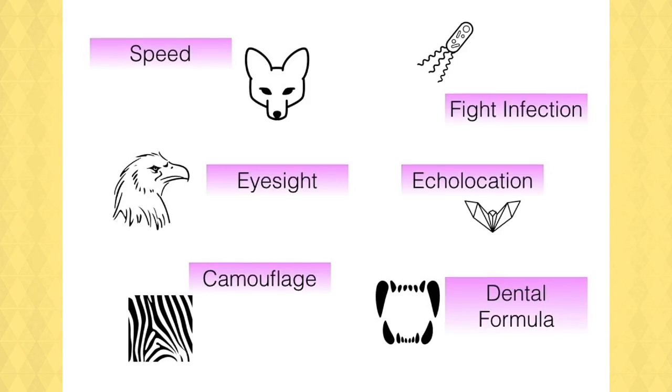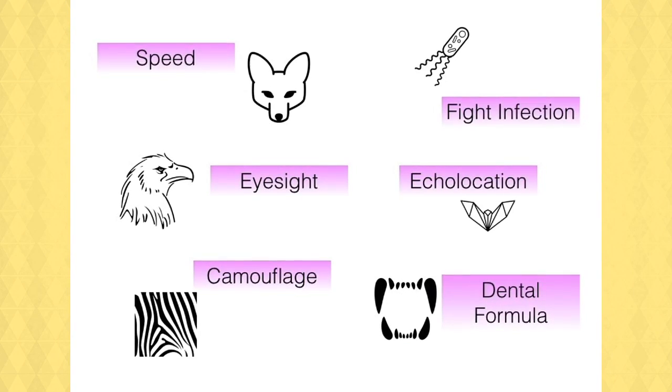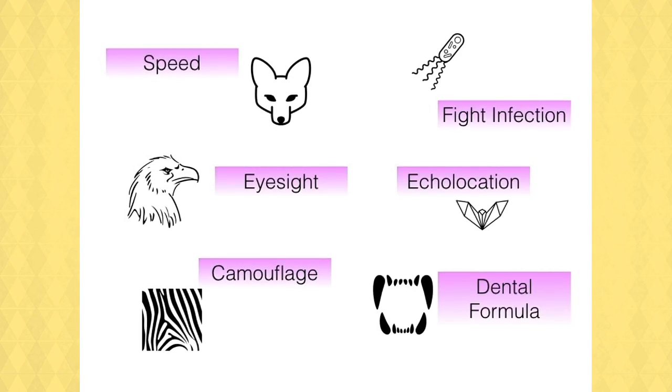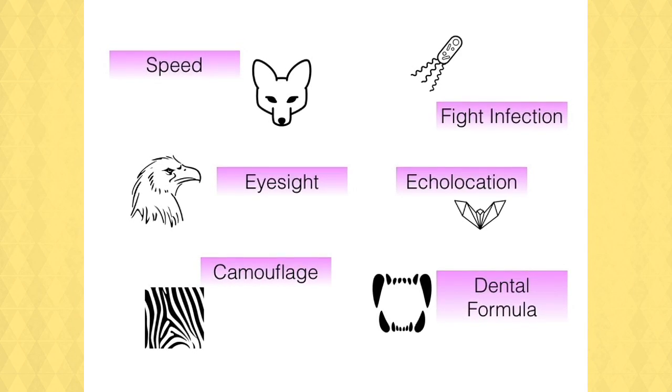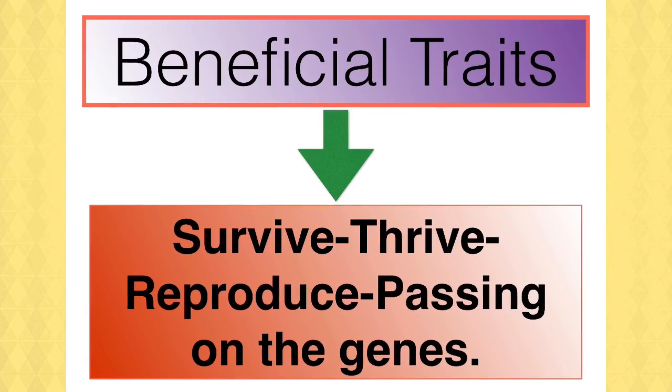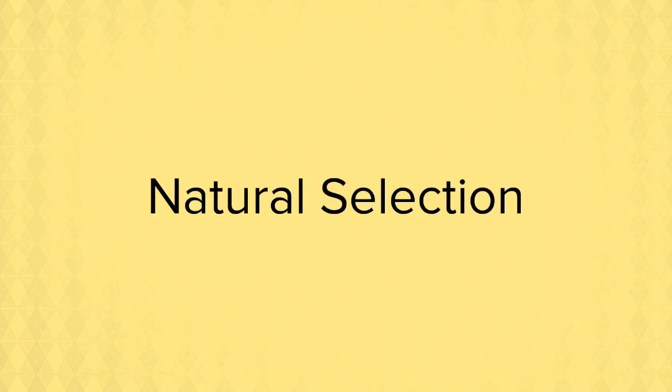Some beneficial traits would be echolocation, the ability to fight infection, being able to run faster to get away from predators, excellent eyesight so that you can hunt better, camouflage to avoid predators. All of these are great beneficial traits. They give the organism the edge. They enable it to survive, thrive and pass on that gene. This is natural selection, how populations change slowly over time.